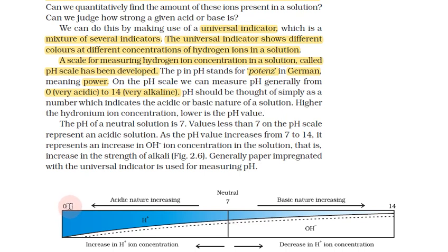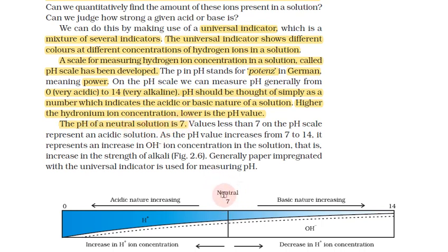As we look at the pH scale, acidic nature increases toward 0. Highly acidic pH is 0. pH should be thought of as simply a number which indicates the acidic or basic nature of the solution. A pH value less than 7 is acidic. From 7 to 14, OH ion concentration increases, indicating basic solution.